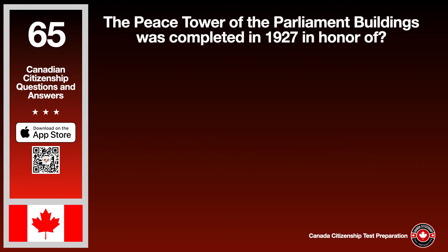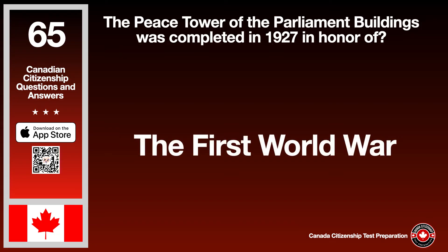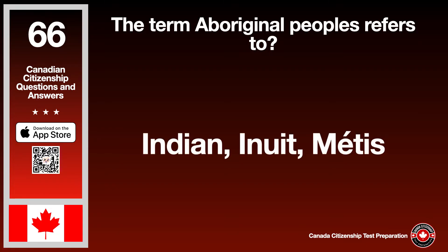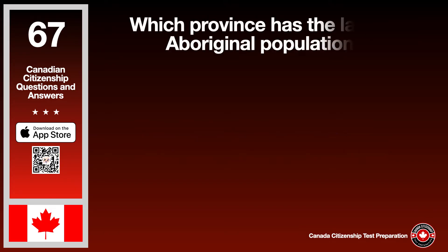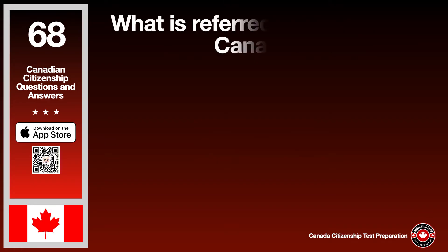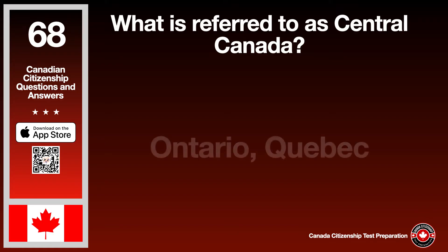The Peace Tower of the Parliament Buildings was completed in 1927 in honor of the First World War. The term Aboriginal peoples refers to Indian, Inuit, and Métis. Which province has the largest Aboriginal population? The answer is Manitoba. What is referred to as Central Canada? The answer is Ontario and Quebec.